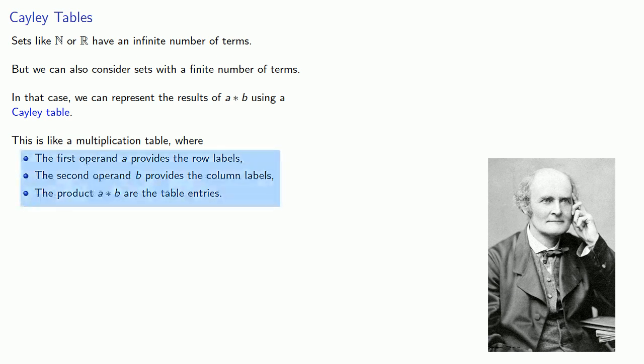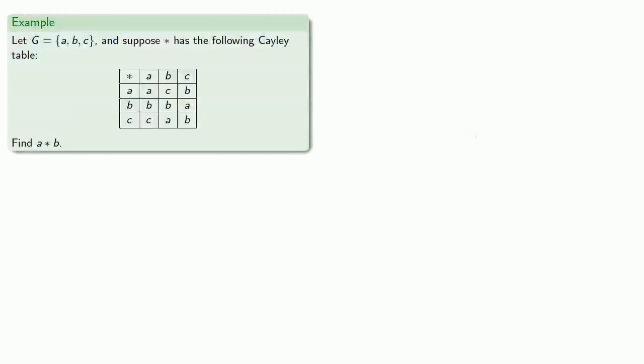We'll use this form because it's more consistent with what we're used to seeing in linear algebra and the description of matrices. For example, let G be the set of three elements A, B, and C, and suppose our binary operation star has the Cayley table.